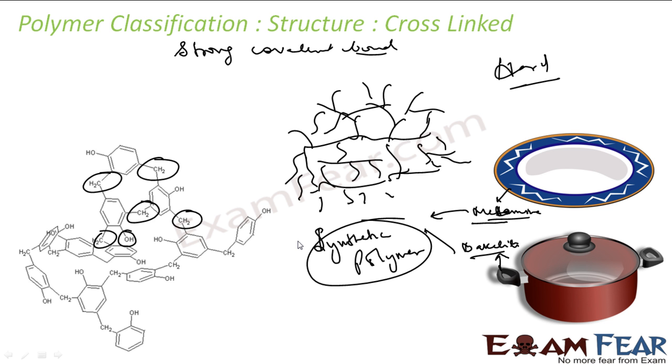So given any polymer, you can think about it from the source perspective — whether it is natural or synthetic — and you can also think about it from the structure perspective — whether it is linear, branched, or cross-linked.